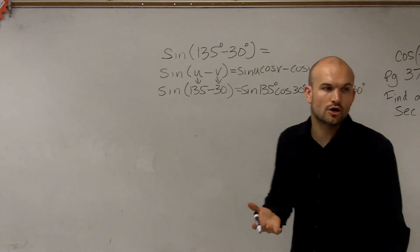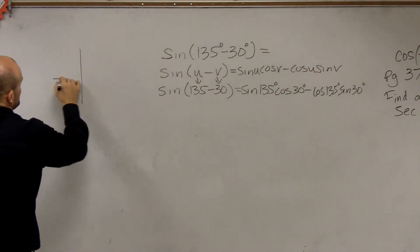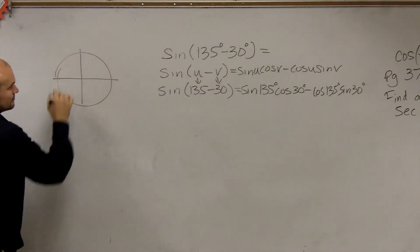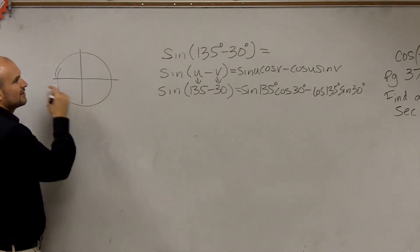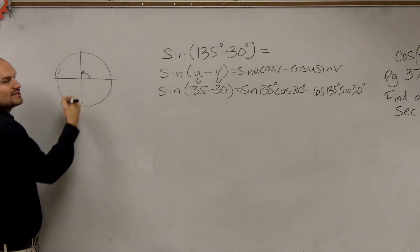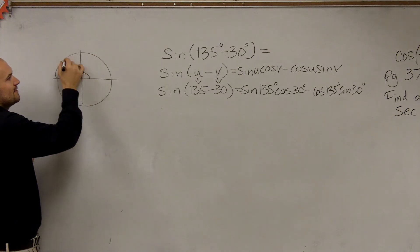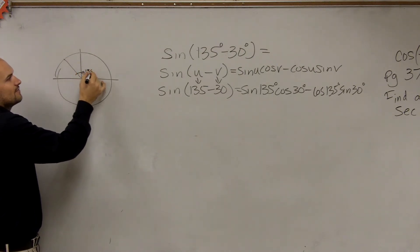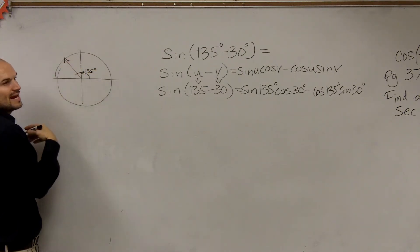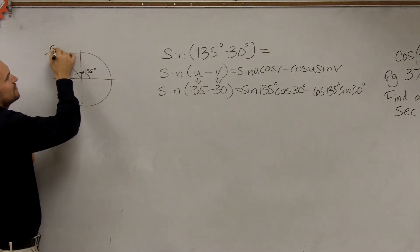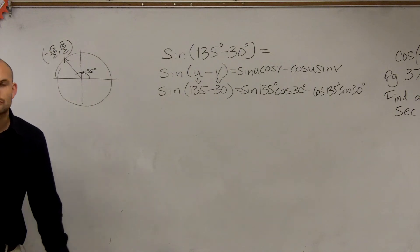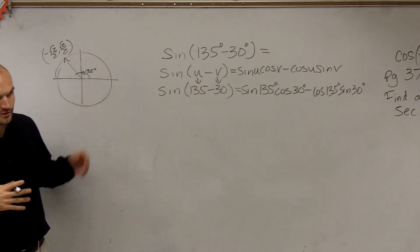So now we need to go back and determine what are our points by using the unit circle. We have 135 degrees. Well, ladies and gentlemen, from here to here is 90 degrees. Add 45 degrees, and we get 135. So what is that angle? Negative square root of 2 over 2 comma square root of 2 over 2. All right? Same thing as 3 pi over 4, 135 degrees.